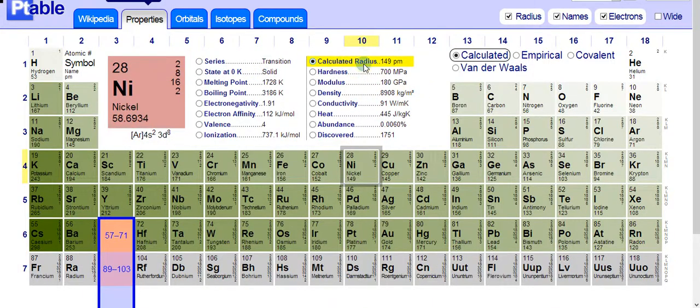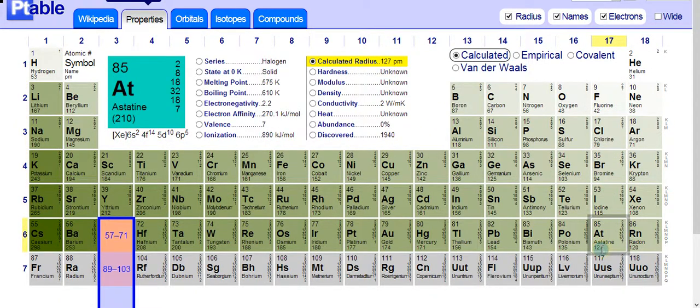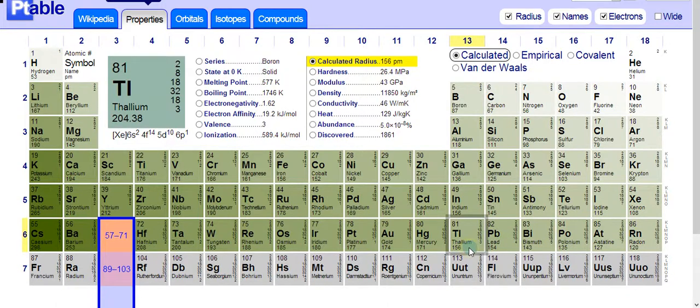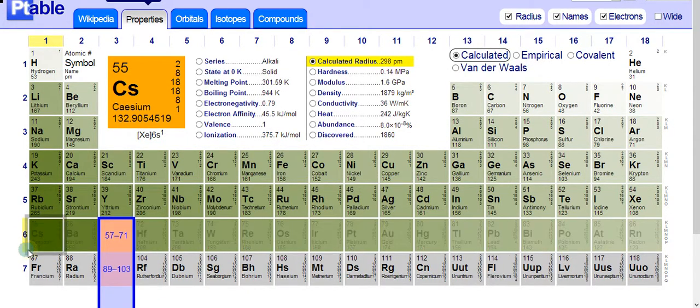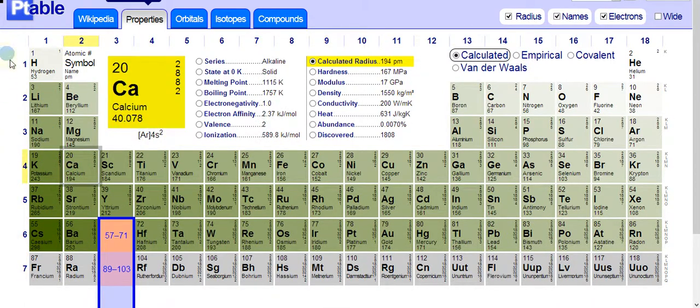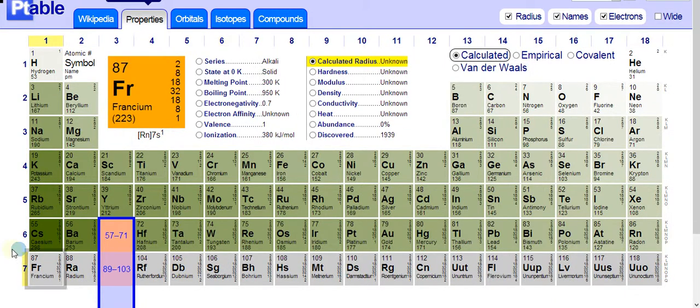As you can see, here's the calculated radius, and it's color-coordinated right down here at the bottom. And it tells you the radius in picometers, right here, picometers. Cesium is the largest of this. And you can see that trend. The arrow goes down here, it gets larger, and then it goes this way, it gets larger.